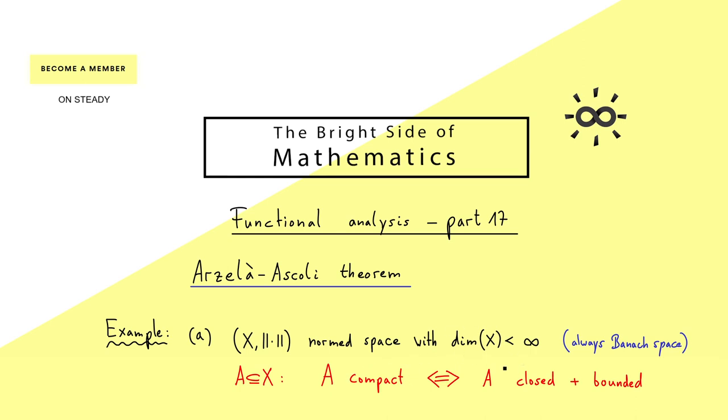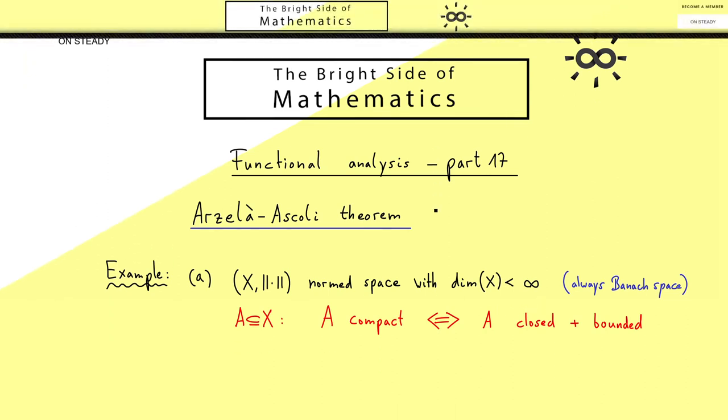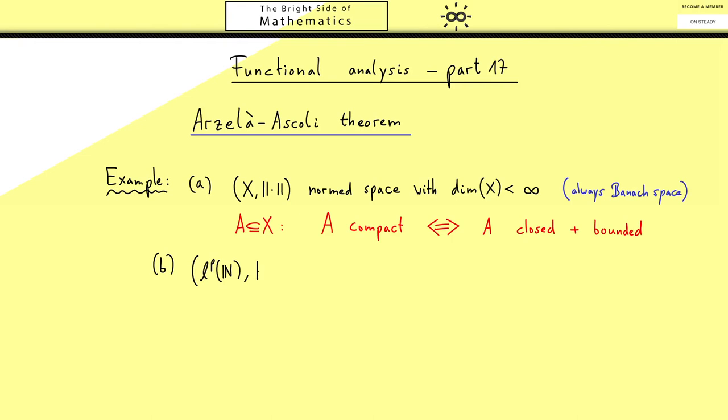Please keep in mind that we have already learned that in general metric spaces only the implication from left to right is correct. Indeed this is what we have in an infinite dimensional normed space. So let's look at such an example. I choose the lp space with the p norm for p less than infinity.